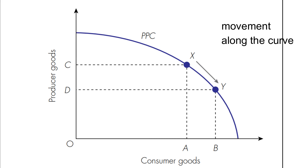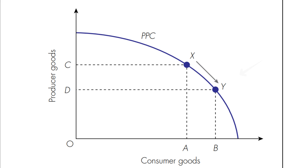Let's move on to movements along the PPC curve. This simply means when we move from producing at one certain point to another, there will be a movement in the curve, and this will result in an opportunity cost — we will lose out on one certain product because we are producing more of one product than the other. In this figure, you can see a movement along the PPC from point X to point Y, which means we are producing more consumer goods than producer goods, but at an expense of fewer producer goods.